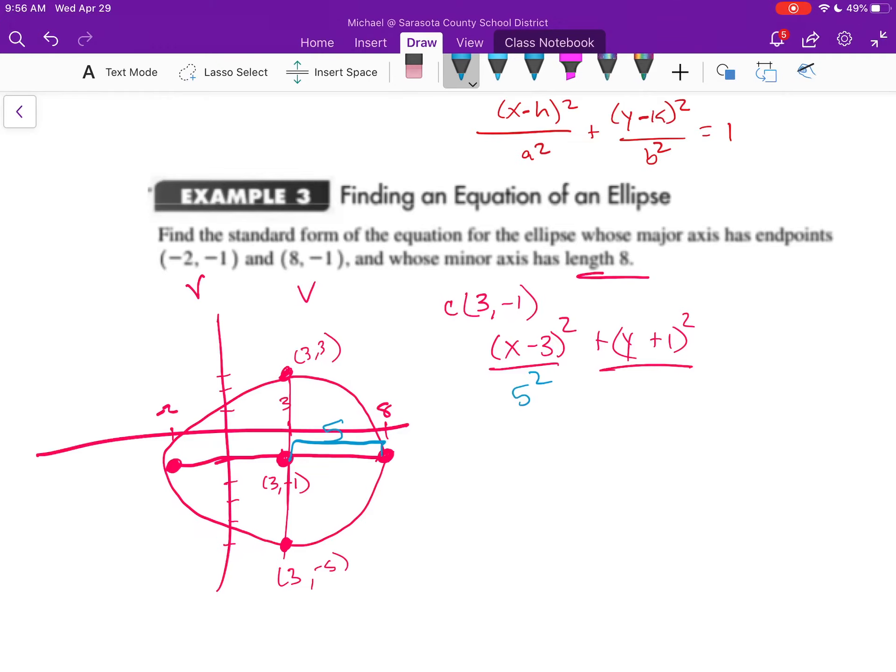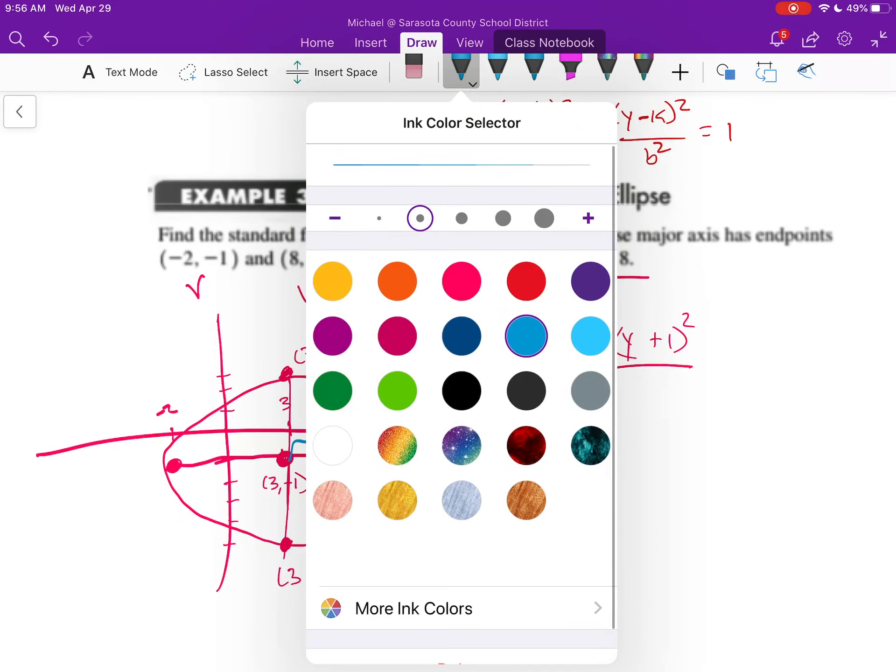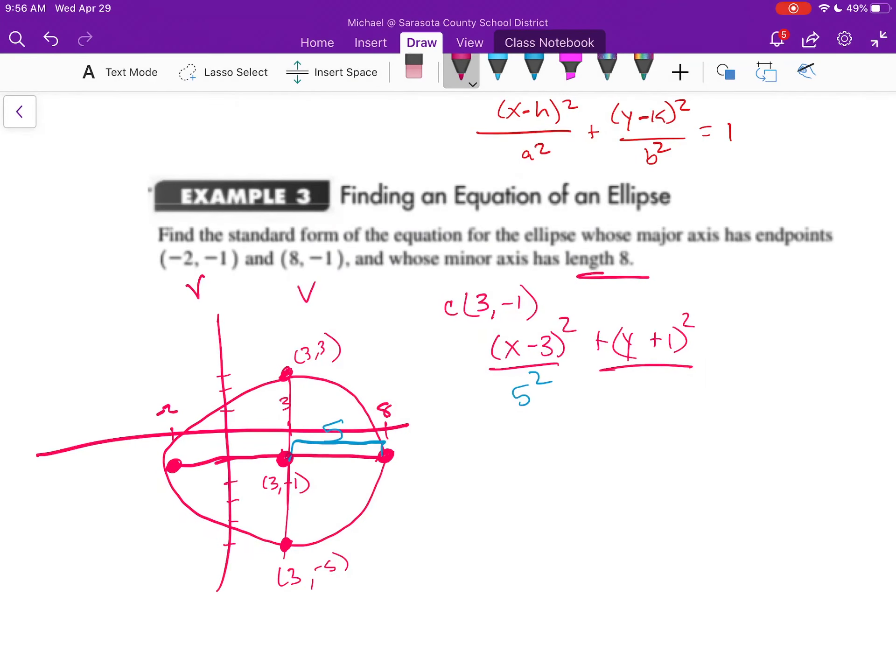The distance from our b, when it's a horizontally represented ellipse, is going to be from the center to the endpoint on the minor axis. So that's a distance of 4. So I'm going to have 4 squared down here. And all of that will be set equal to 1. And so then we end up seeing that we have x minus 3 squared over 25 plus y plus 1 squared over 16 equals 1.